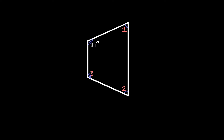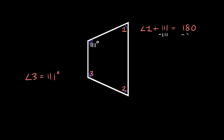The first angle we can solve for is angle three. Since we know this one is 111 degrees, angle three must also be 111 degrees. Now remember, an obtuse angle plus an acute angle should equal 180. So to solve for angle one, we say angle one plus 111 is equal to 180. Subtracting 111 from both sides, angle one is equal to 69 degrees.